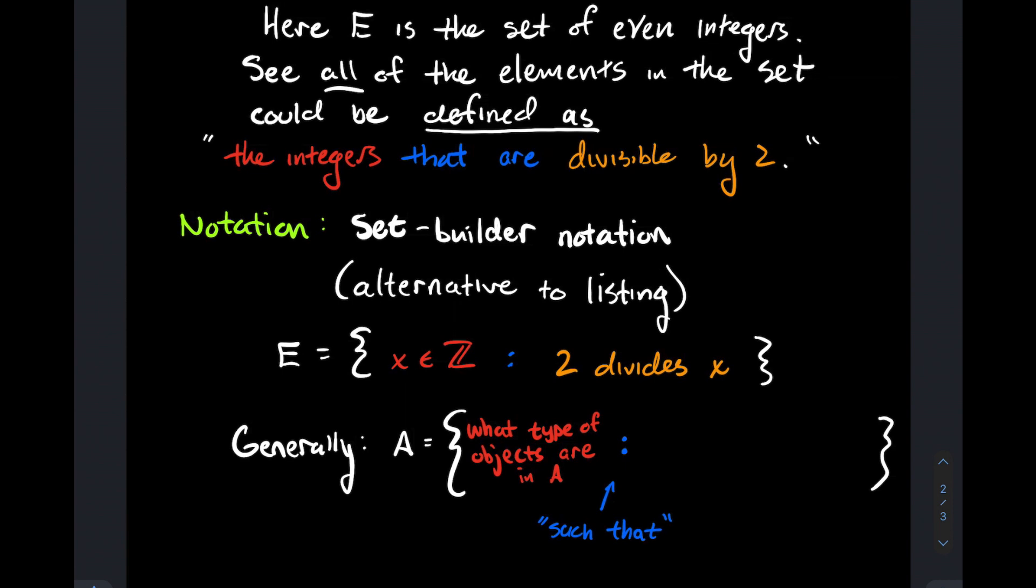The next thing you put down is the colon, and colon means 'such that.' An alternative to the colon: some authors like to use a vertical line to separate the red from the orange. But then what goes to the right of the colon? The defining condition for an element to be in A. Like I only want the integers that are divisible by 2. That divisible by 2 is the defining condition for an integer to belong to E.